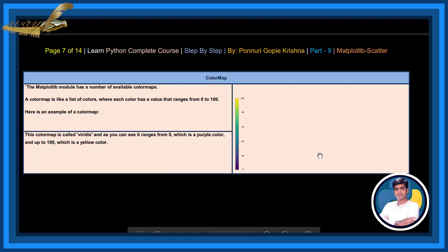Color map. The matplotlib module has a number of available color maps. A color map is like a list of colors where each color has a value that ranges from 0 to 100. Here is an example of a color map. This color map is called viridis. And as you can see it, it ranges from 0, which is a purple color, and up to 100, which is a yellow color. See the purple and yellow color.